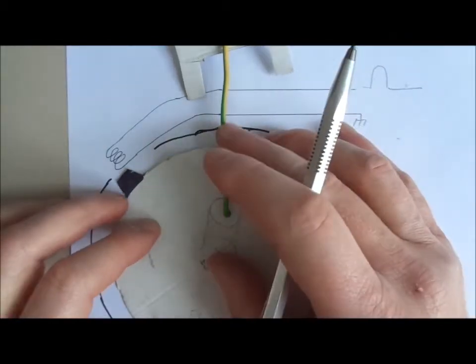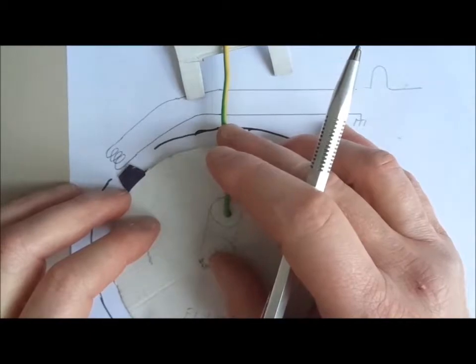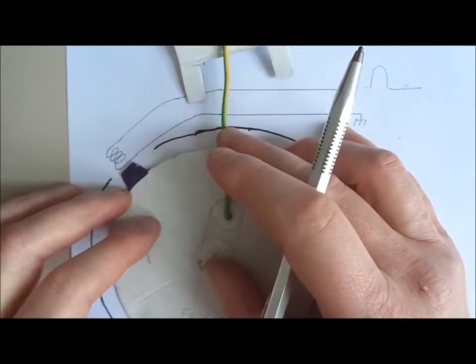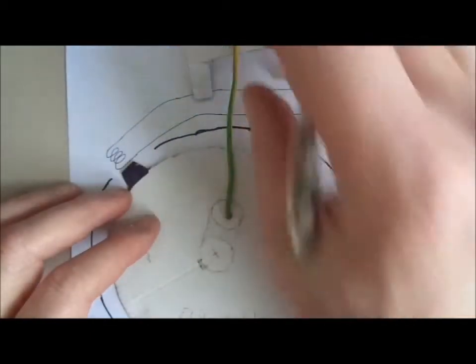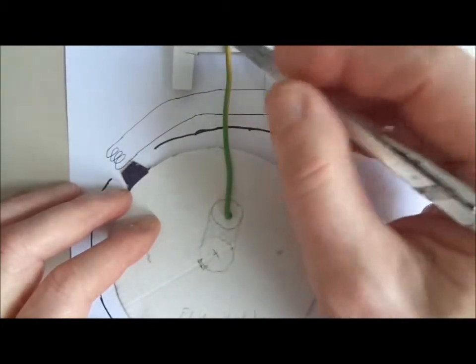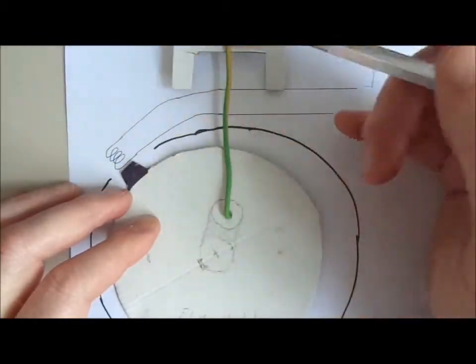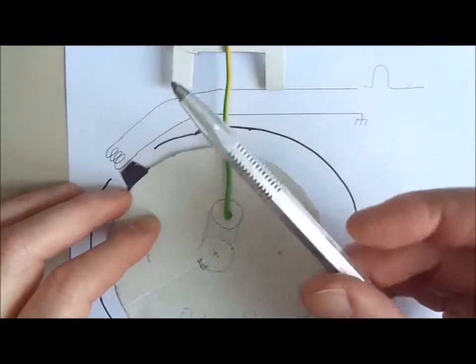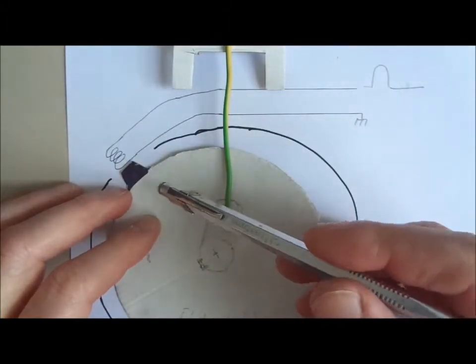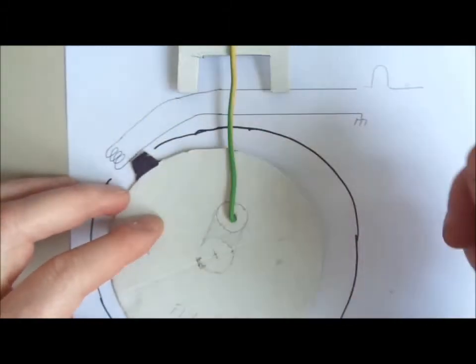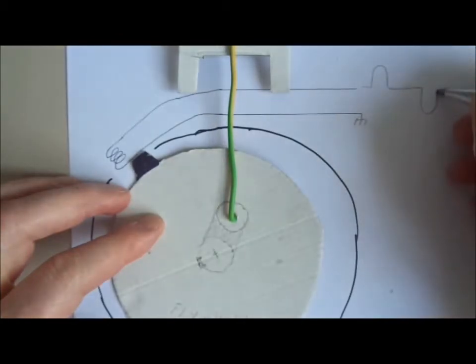And finally, the bar moves away from the pickup. At this moment, at this very moment, the piston reaches the top dead center. And when the bar moves away from the pickup coil, the coil produces a negative signal.